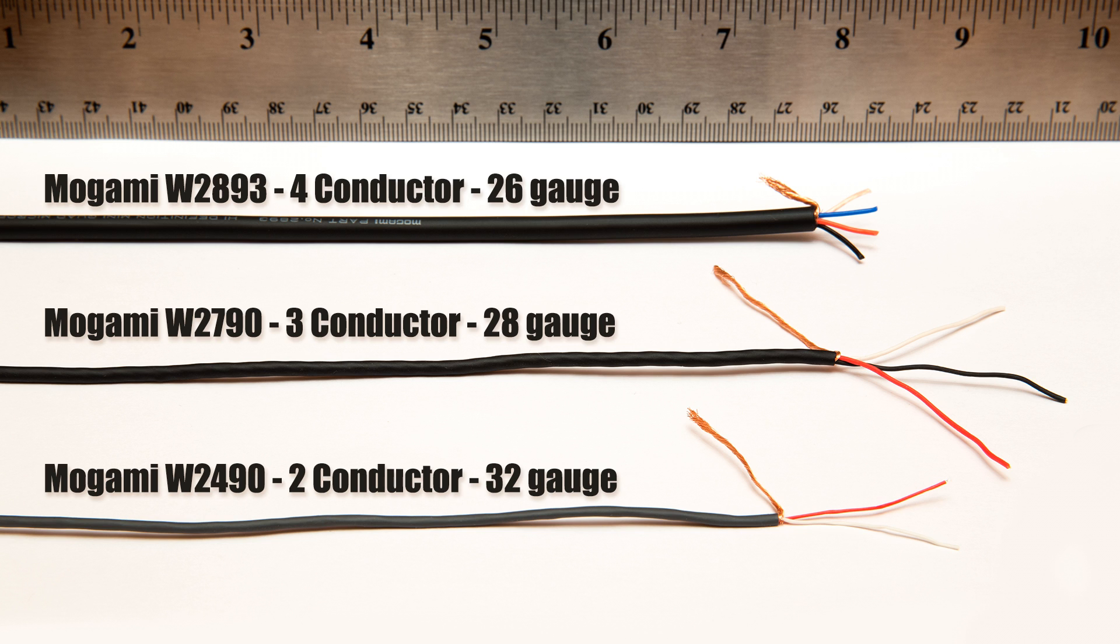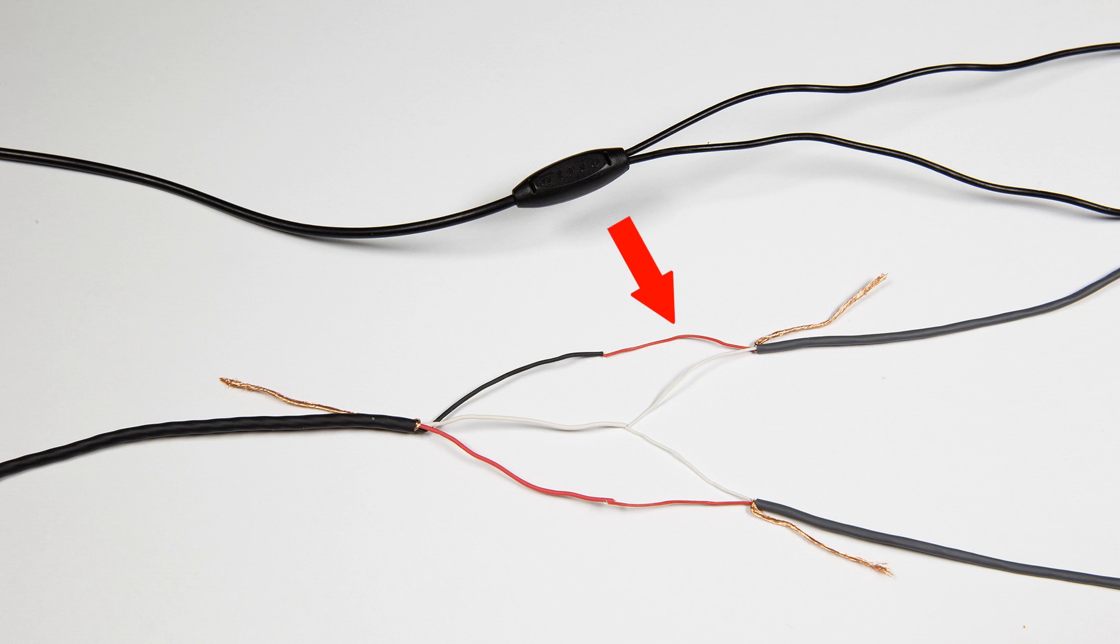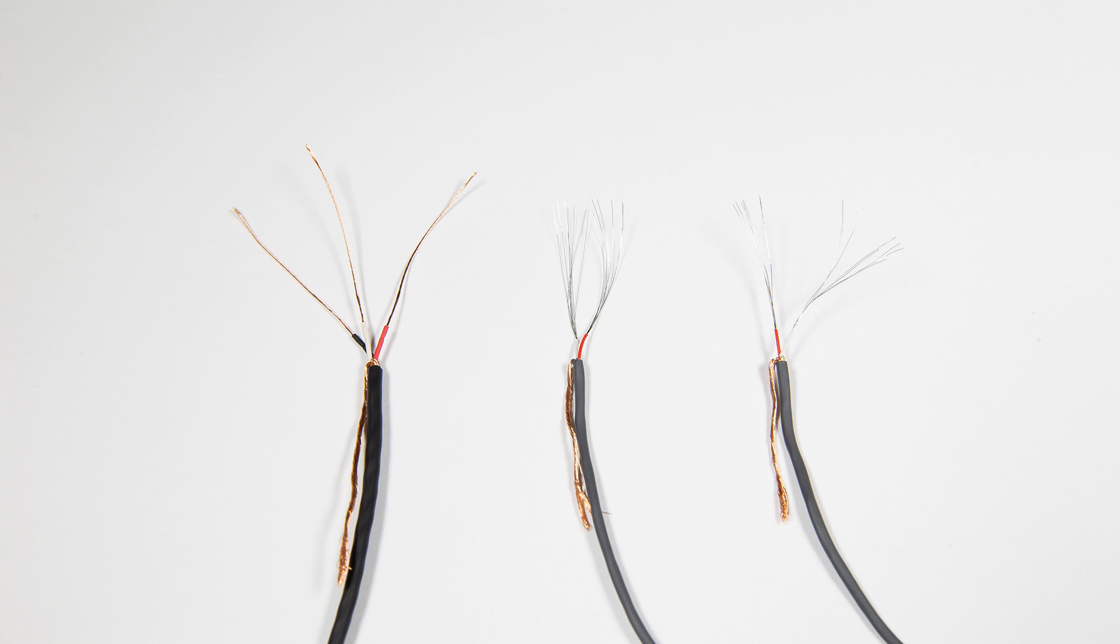So the plan is pretty simple: left goes to left, right goes to right, and the grounds join together. Normally you'd cut off this excess copper shielding, but I'll show you why we're saving it for later.